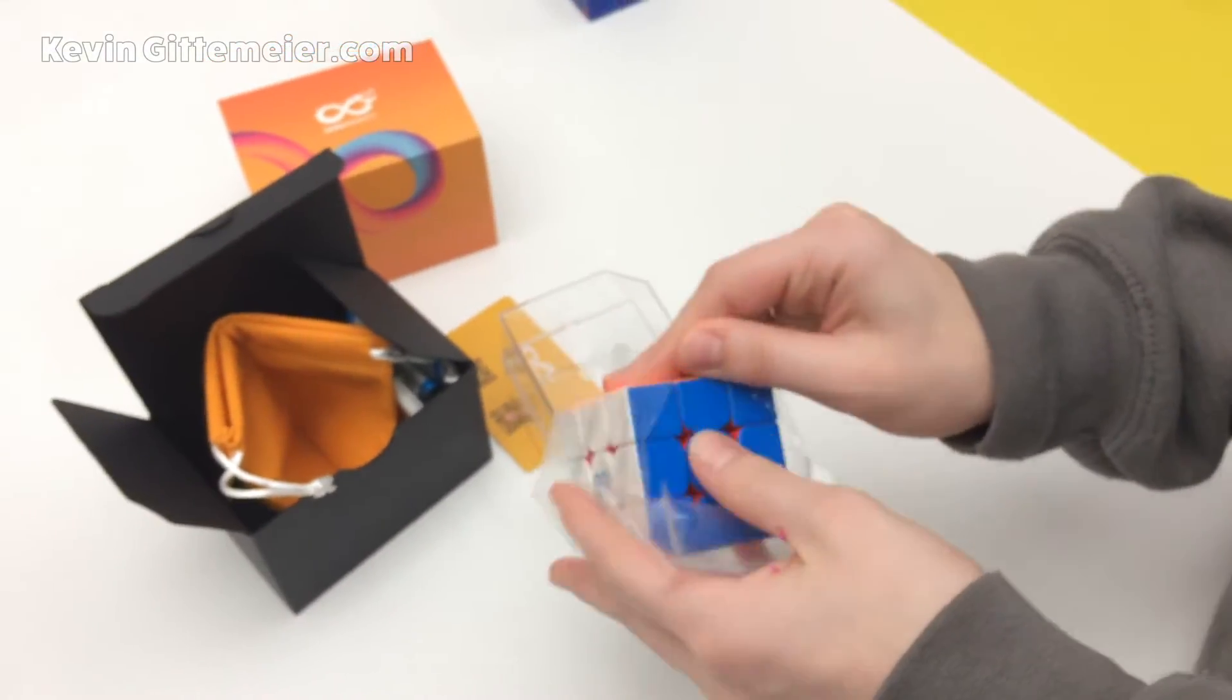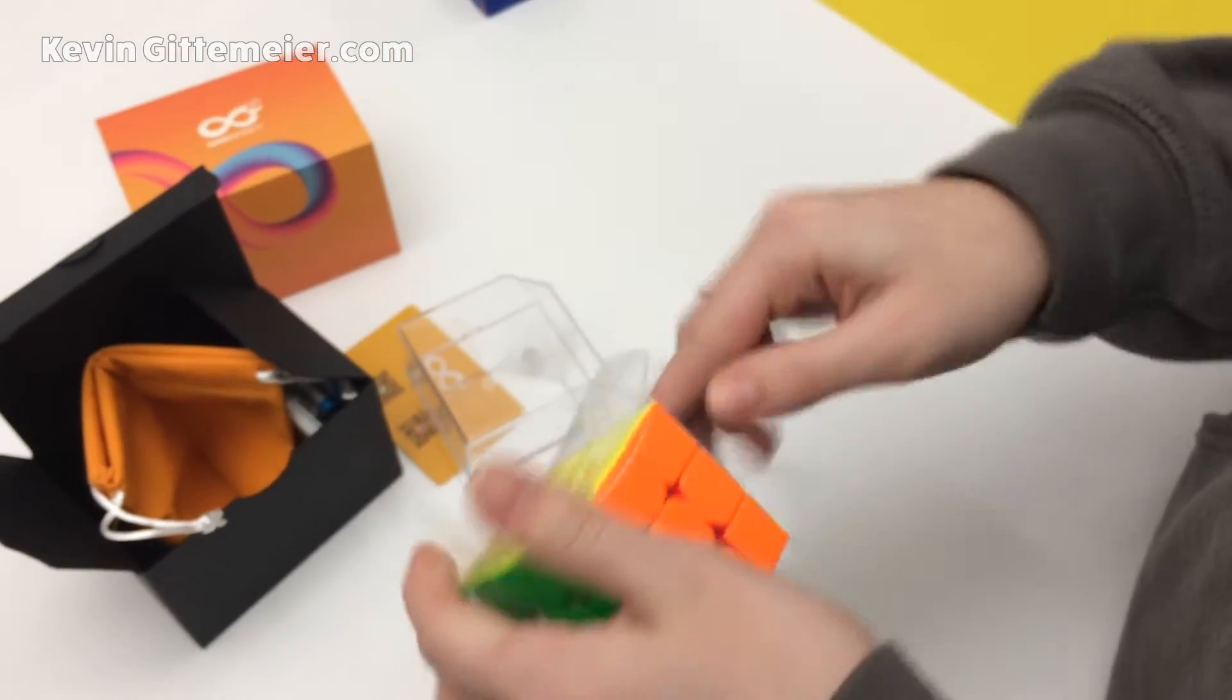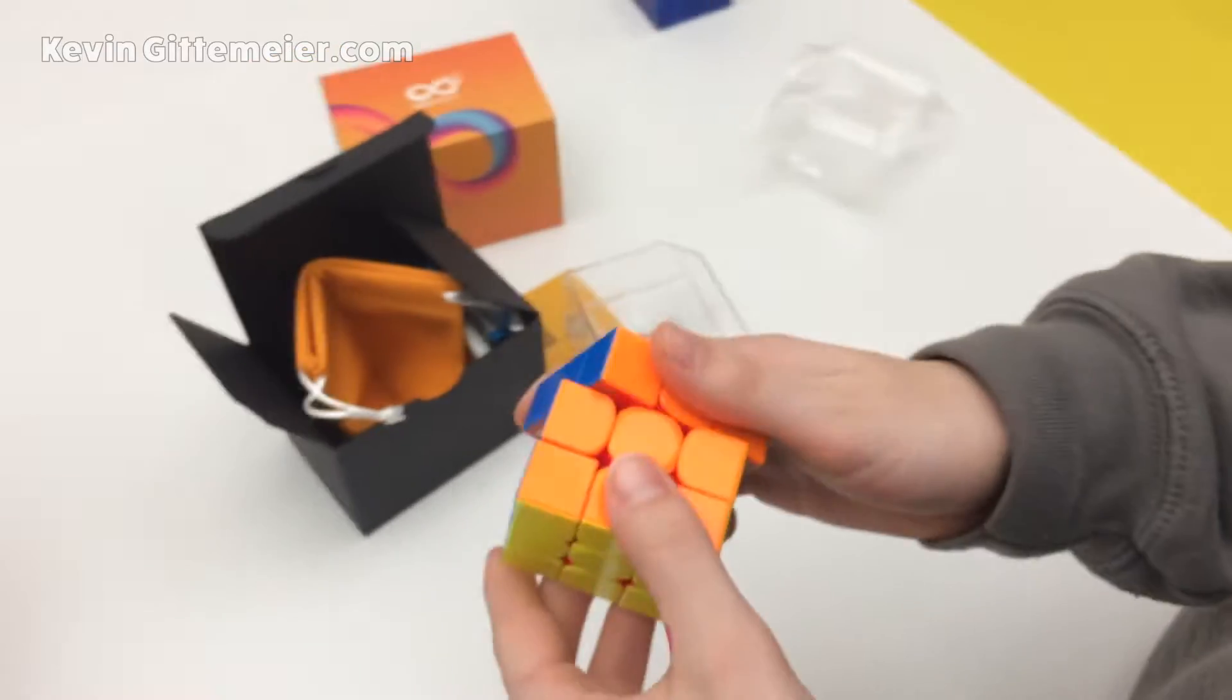Let's see what this is all about. It's a stickerless magnetic cube, so it's got magnets in it. I guess they're so fast now, it just kind of helps have the magnets lock it in place a little bit. I guess cubing technology has come a long way in ten years.